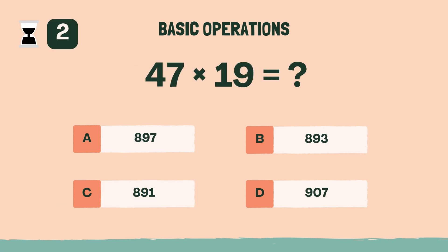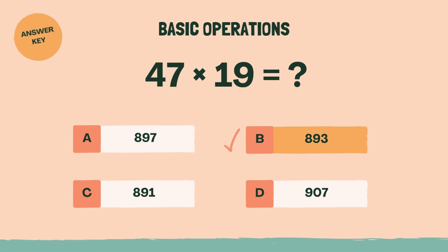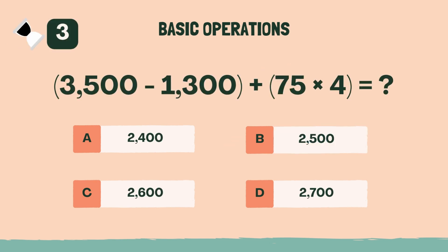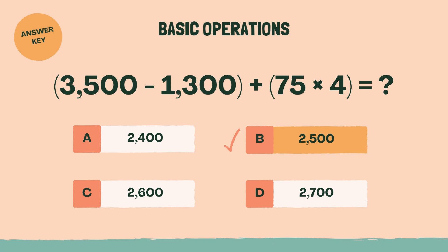What is 47 times 19? The answer is B, 893. What is 3,500 minus 1,300 plus 75 times 4? The answer is B, 2,500.